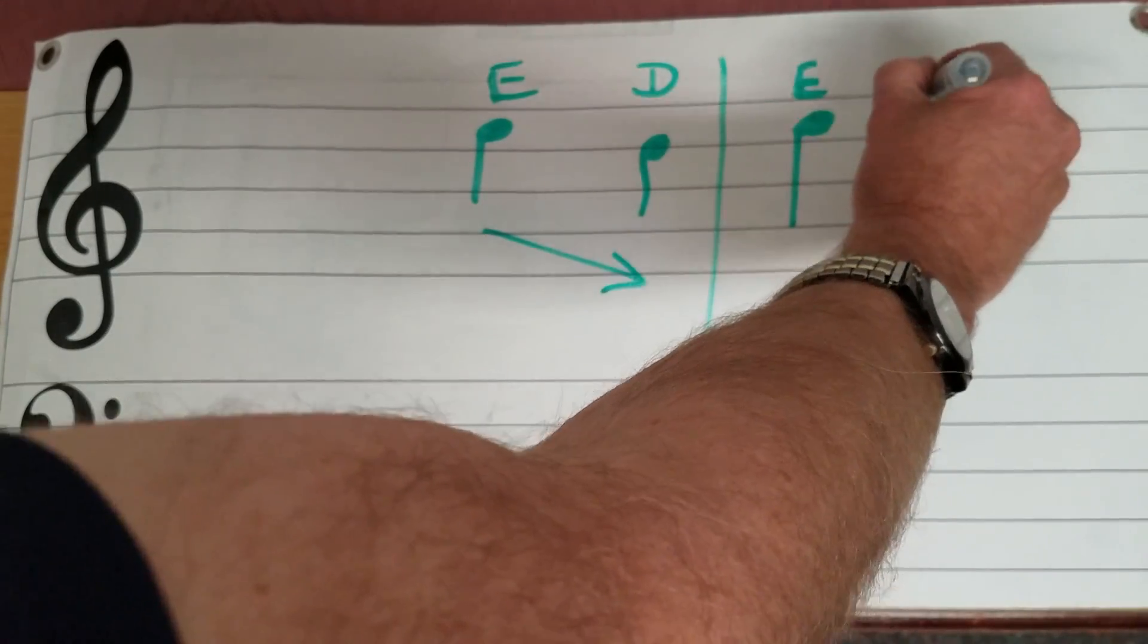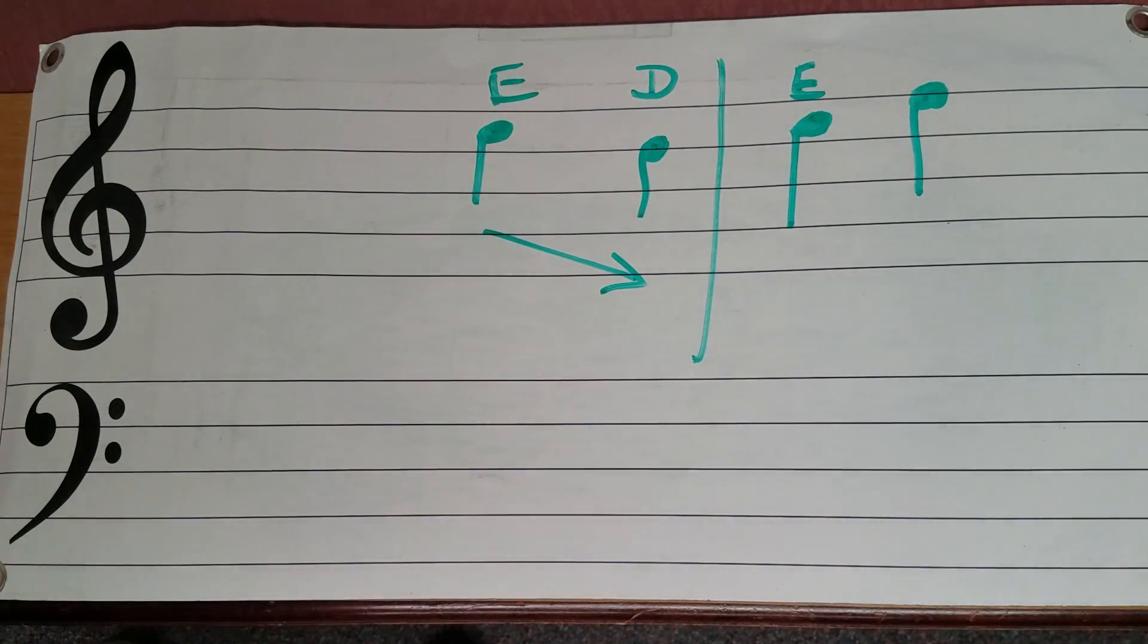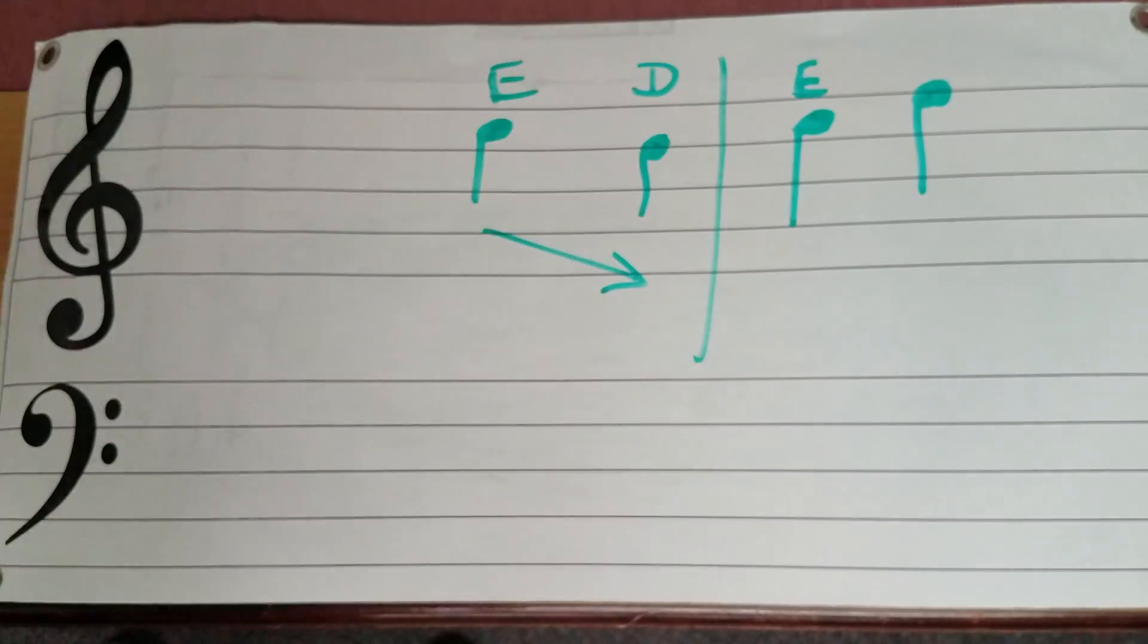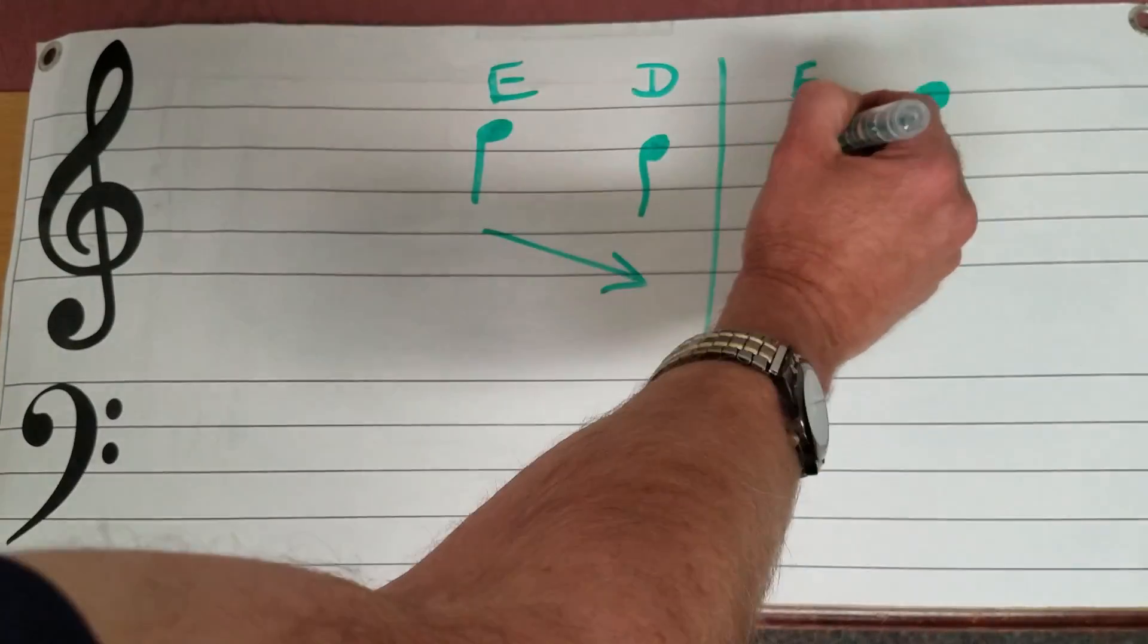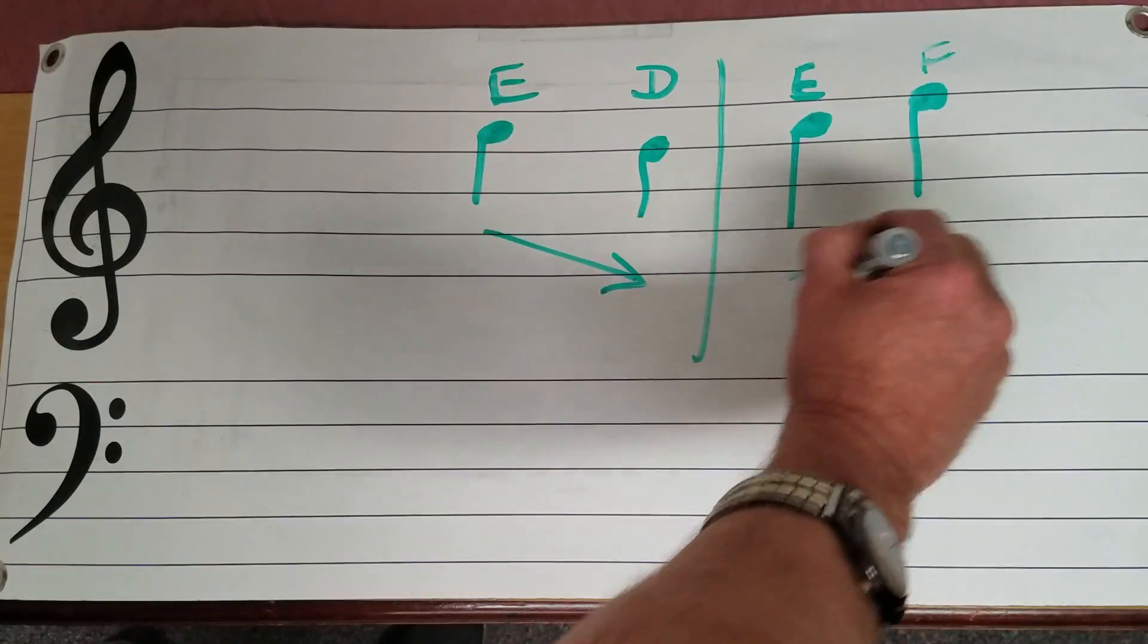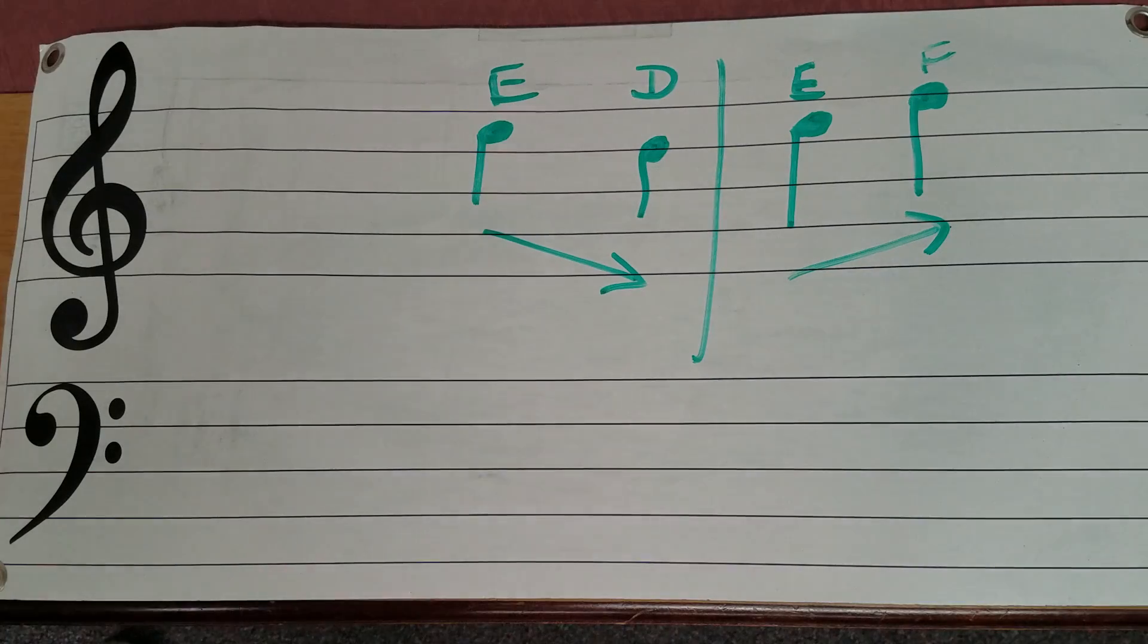Now, as you get into more advanced music, say you're a pianist, you will start seeing notes like this a little bit higher on the staff. Clearly, if this one's a D, E, we go up. And that one, of course, is an F.